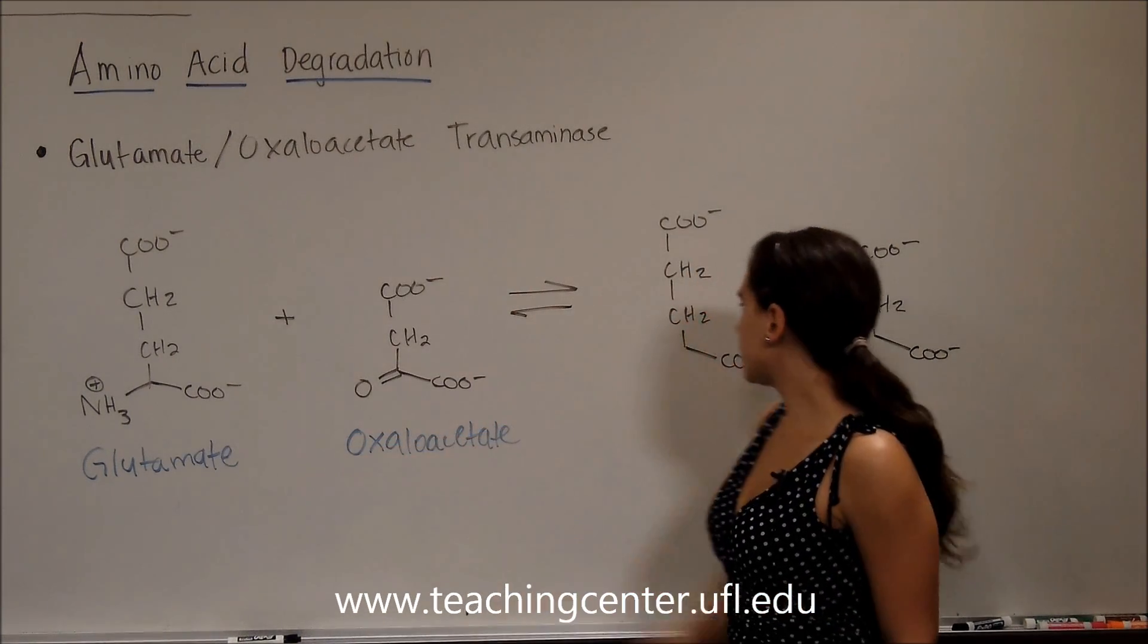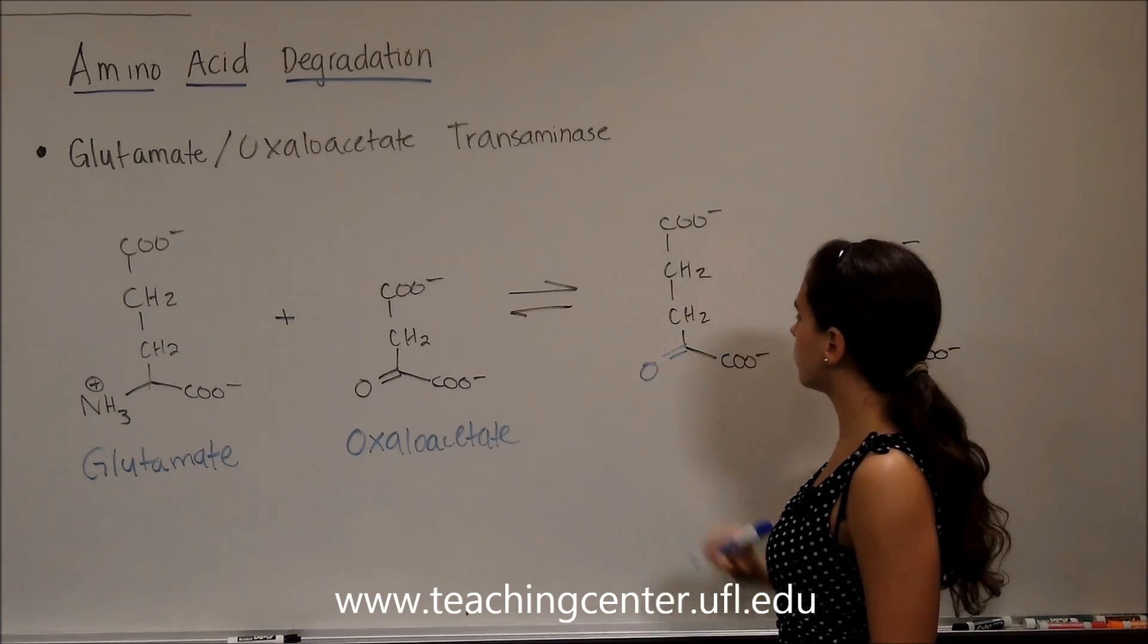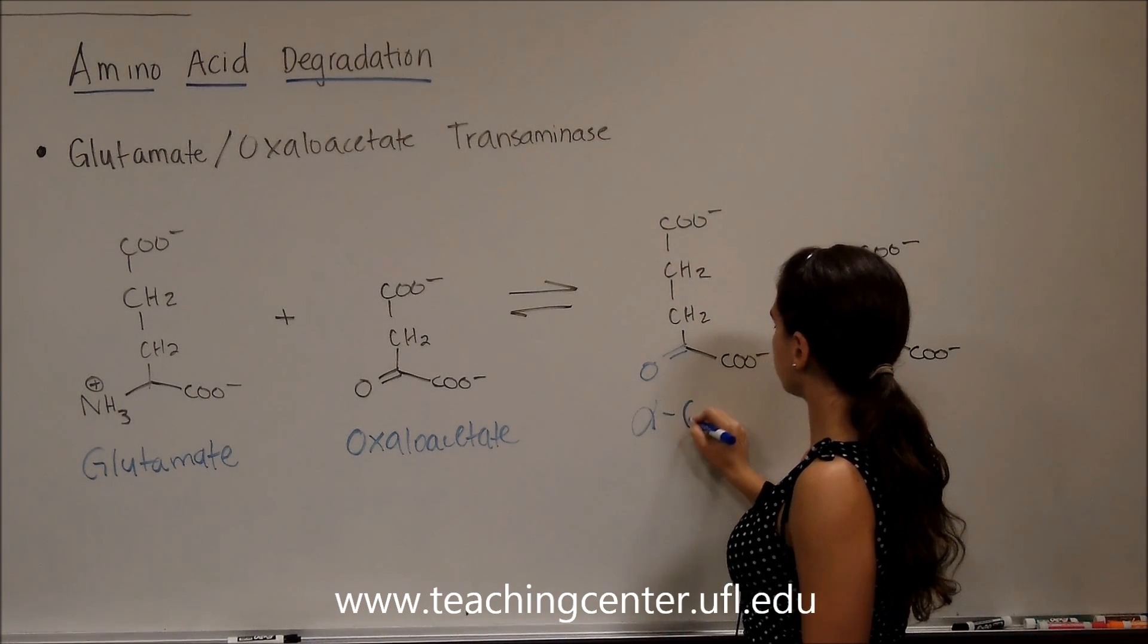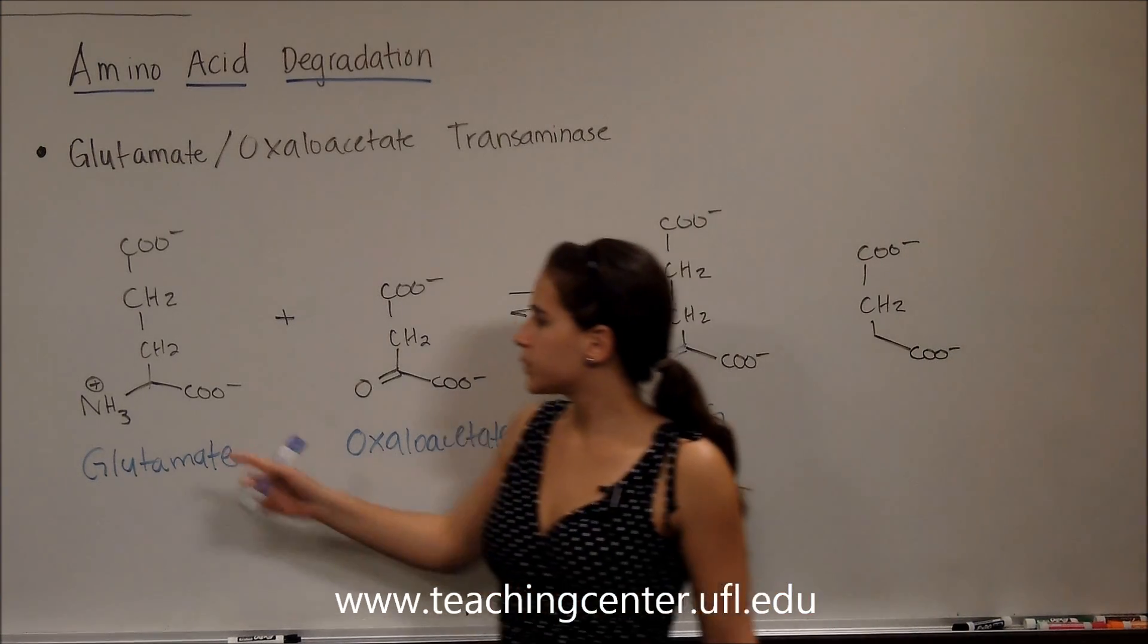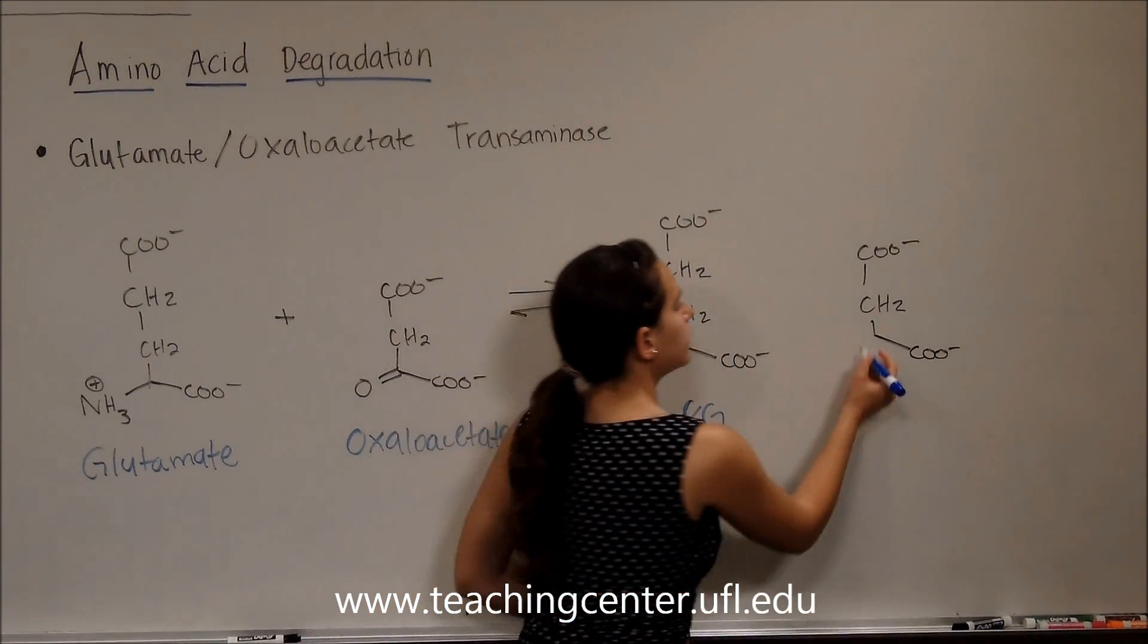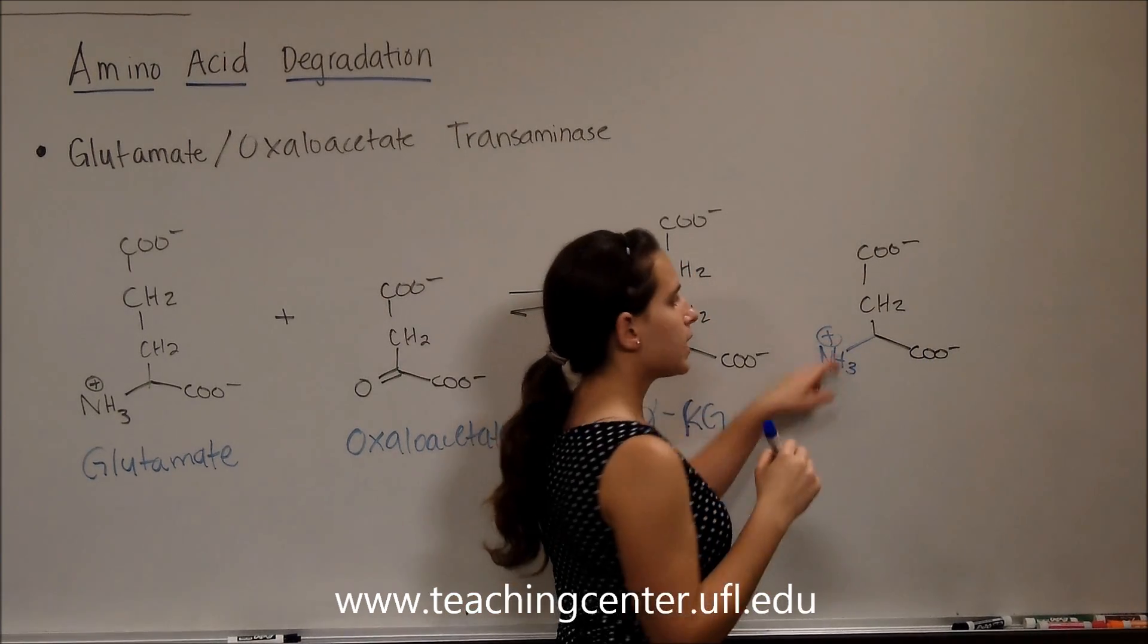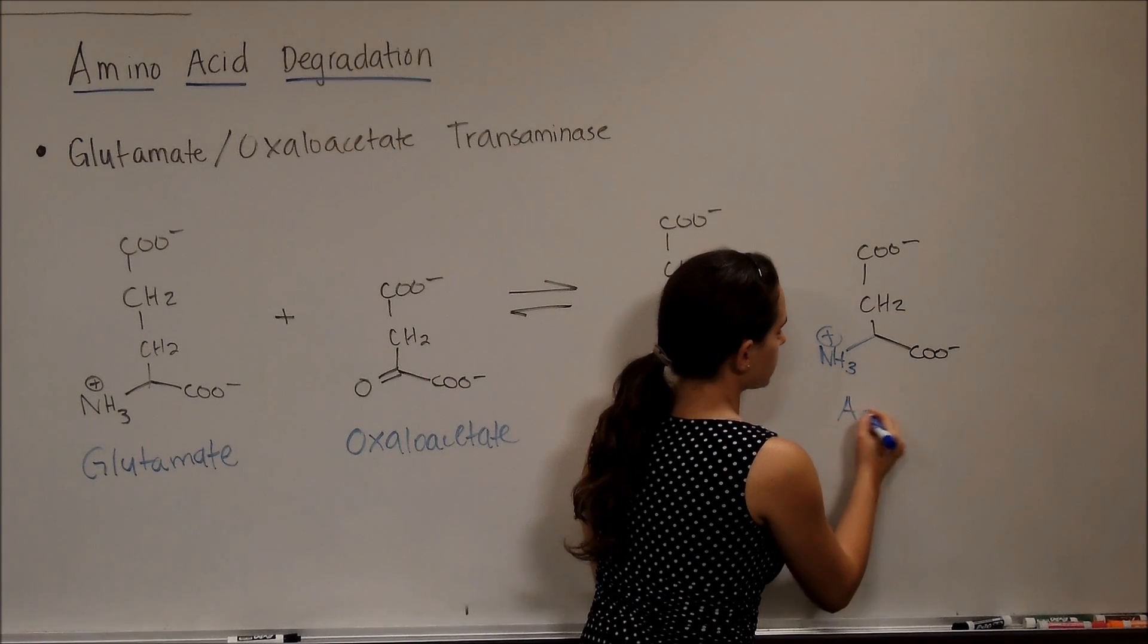And we switch the groups, so let's put that double bond O on glutamate. Here's our backbone. Double bond O on glutamate. Then it becomes 1, 2, 3, 4, 5 alpha-ketoglutarate. And now let's put this NH3 on oxaloacetate over here. So we know it becomes an amino acid because we're putting, we have this backbone. It has one CH2 in a carboxylic acid group, so we know it's aspartate.